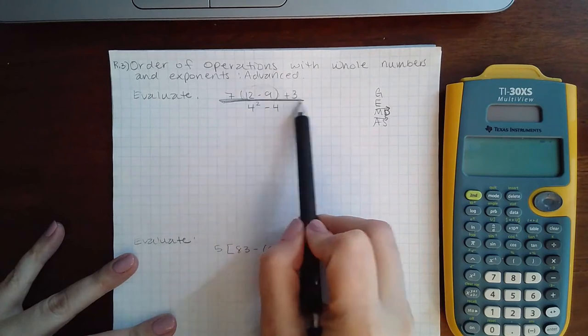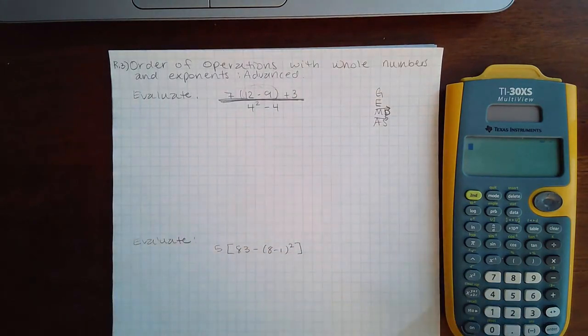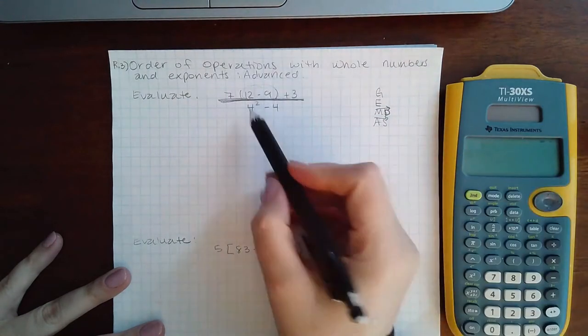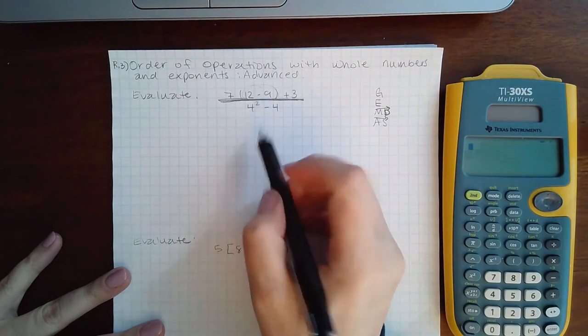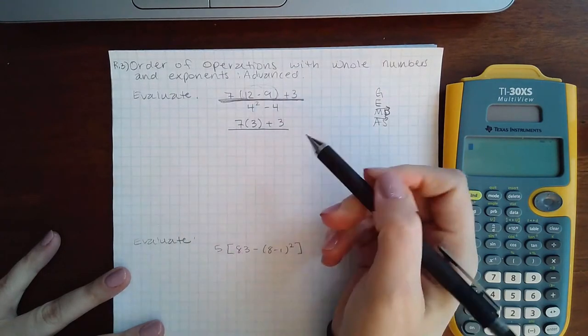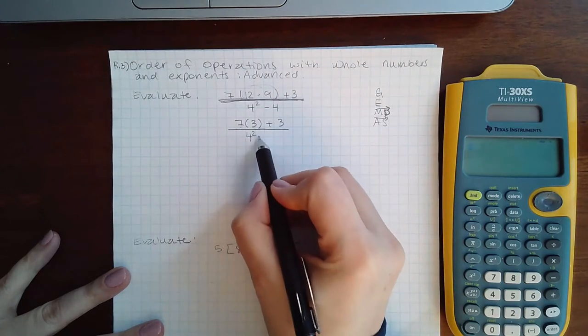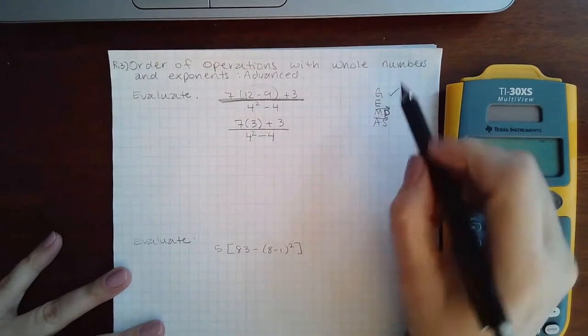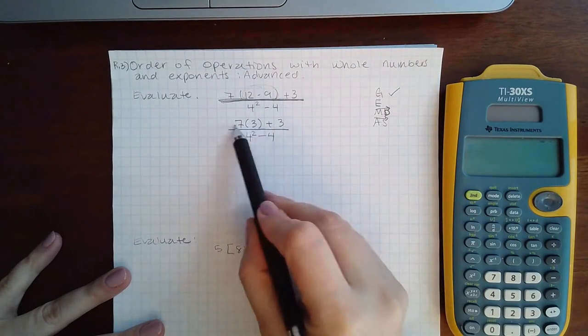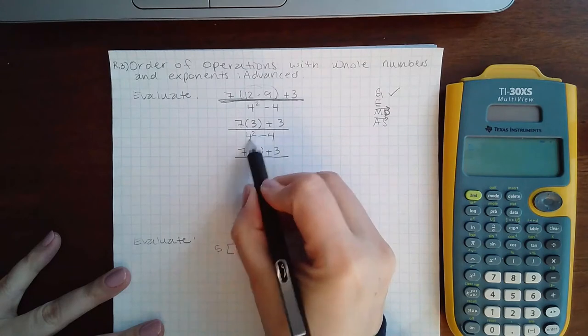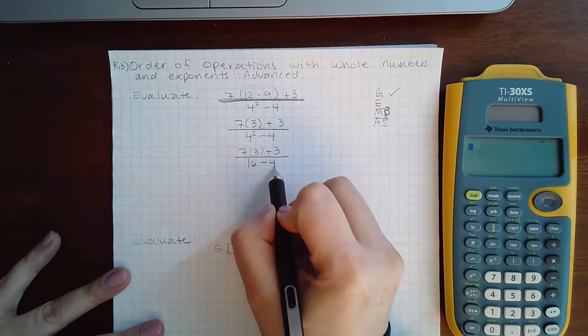So essentially what's going to happen is I need to work on the top and then work on the bottom. For the top, I'm going to start with the rules all over again. I do have a grouping mechanism within that top, and so in that parentheses I would receive a 3. I do not have any grouping mechanisms in the bottom, so that is just going to be rewritten. Then I do have an exponent, but it's only at the bottom. I do not have anything to evaluate at the top, so the top will remain the same, but I will evaluate 4 squared. 4 times 4 is 16.